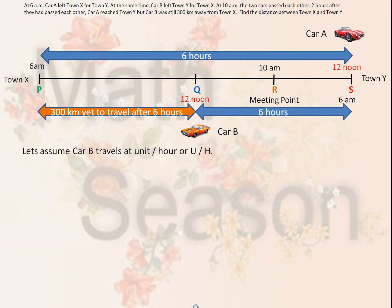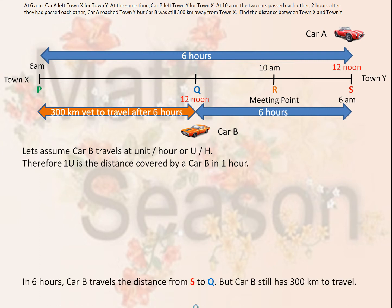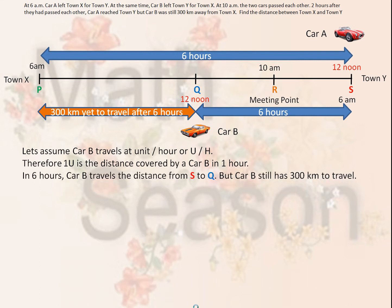Let's assume car B travels at U units per hour. Therefore, 1U is the distance covered by car B in 1 hour. In 6 hours, car B travels the distance from S (which is town Y) to Q (the point reached at 12 noon), but car B still has 300 kilometers to travel.